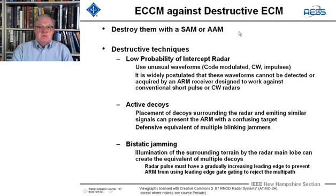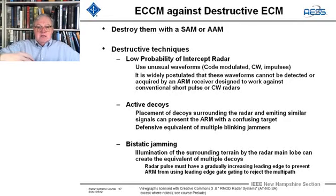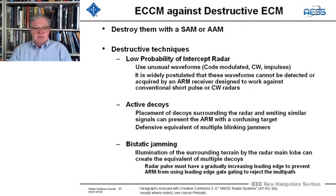For ECCM against destruction, the main destructive entity used against radars is ARMs. We can counter them with a SAM or anti-air missile — just take them out. Other techniques include low probability of intercept radars using coded, modulated, or CW impulse waveforms. Active decoys placed near the radar — emitters 100 yards away — can confuse the ARM as to which is the real radar. Multiple decoys blinking on and off further confuse incoming ARMs, and bistatic jamming bouncing signals off terrain can create effective multiple decoys.